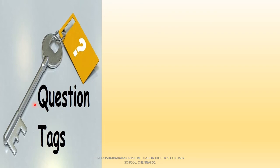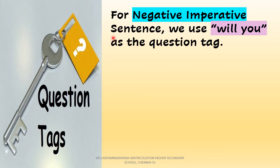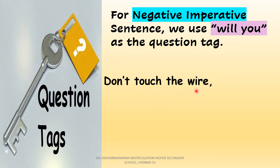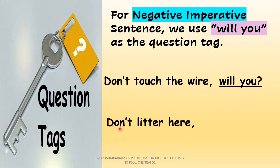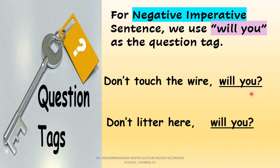Next rule: for the negative imperative sentence, we can use 'will you' as the question tag. Example: 'Don't touch the wire.' This is an imperative sentence giving a warning not to touch the wire, so we use 'will you?' Another example: 'Don't litter here' — again an imperative sentence warning not to make the place untidy, so we use 'will you?' Remember, the subject hidden in the imperative sentence is always 'you,' so the subject pronoun of the question tag is also 'you.'